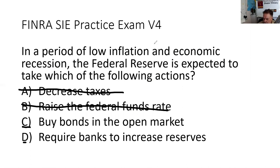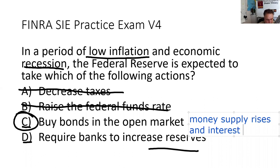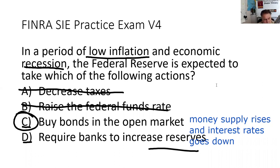Since it's a period of low inflation and recession, the Fed is going to buy government securities in the open market. When they do that, the money supply goes up and interest rates should go down. Low interest rates should, in theory and practice, refloat the economy — or as Lord John Maynard Keynes said, reignite those animal spirits.